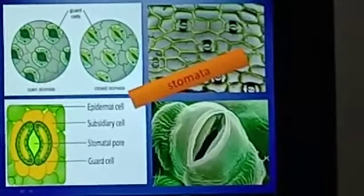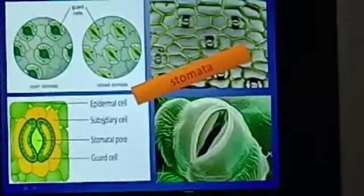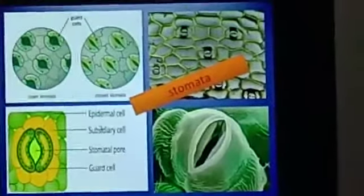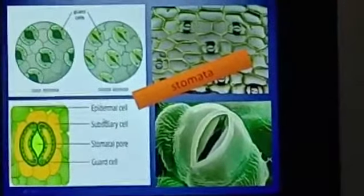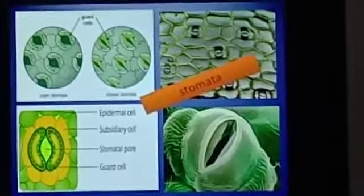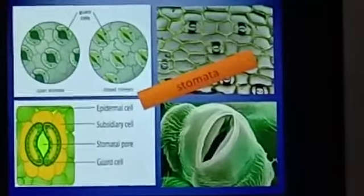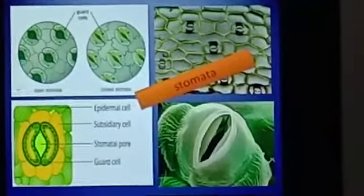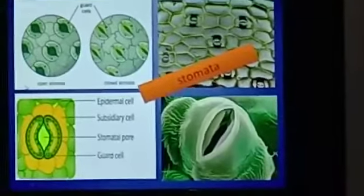The stomata can open and close as per the requirement, allowing carbon dioxide to enter and oxygen to leave during photosynthesis. Stomata also help the plant to release excess water. That is the process called transpiration, which occurs with the help of stomata.